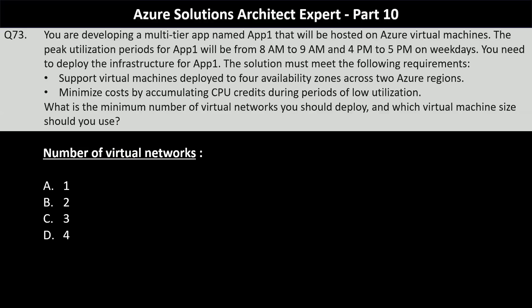What is the minimum number of virtual networks you should deploy, and which virtual machine size should you use? For the number of virtual networks, the options are 1, 2, 3, or 4. You need at least one virtual network per Azure region, and since you have two Azure regions, you will need at least two virtual networks.